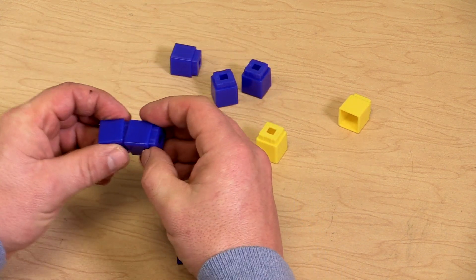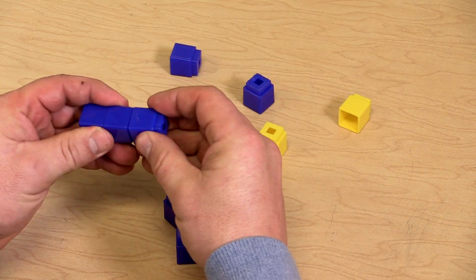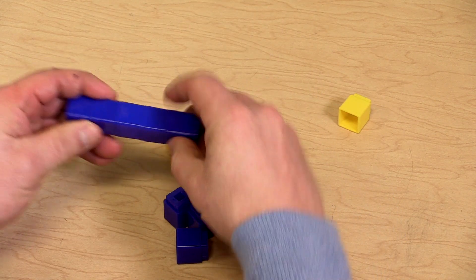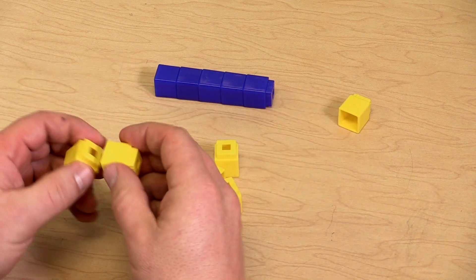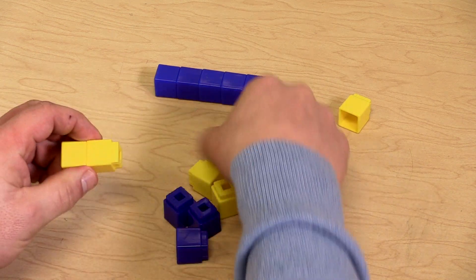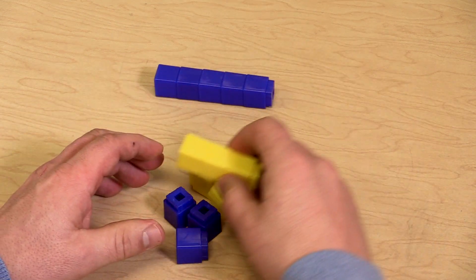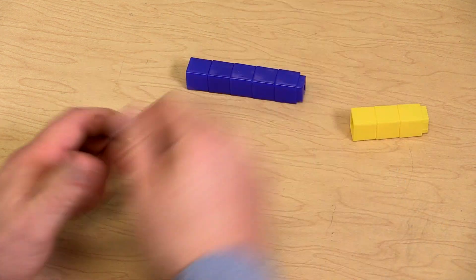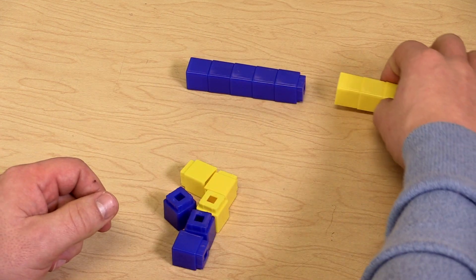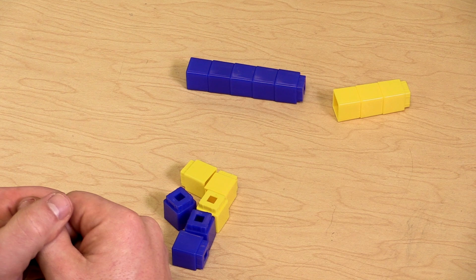So we'll build a group of 5 blue and a group of 3 yellow. The 5 blue is representing 5 cups of blue paint, the 3 yellow is representing 3 cups of yellow paint.